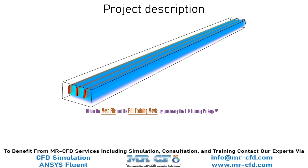In this simulation, hot nanofluid flows at a velocity of 0.1 meter per second and a temperature of 343.15 Kelvin through three pipes inside the radiator. Cold air flows at a velocity of 3 meters per second and a temperature of 293.15 Kelvin over the pipes.